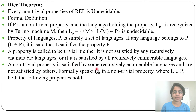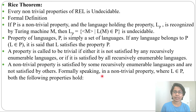A non-trivial property is satisfied by some recursively enumerable languages and not satisfied by others. Trivial means it either satisfies all or satisfies none. Non-trivial means it is satisfied by some recursively enumerable languages and not satisfied by others.